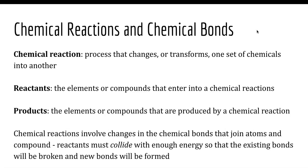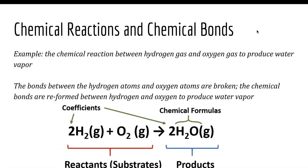Chemical reactions involve changes in the bonds that join atoms together into a compound. Reactants have one set of bonds; they are changed by the chemical reaction and formed into different elements and molecules. What happens is reactants collide with each other with enough energy so that existing bonds are broken and new bonds are formed.